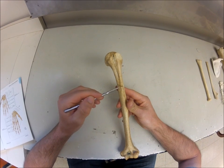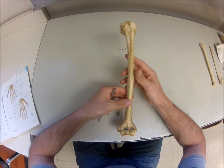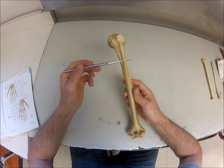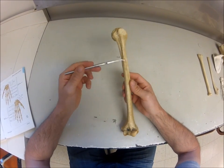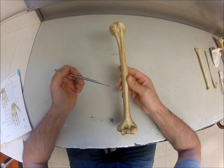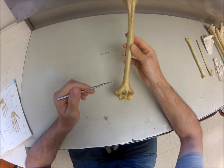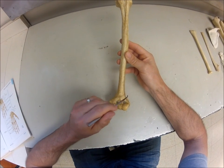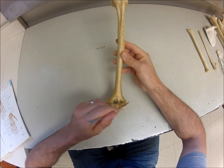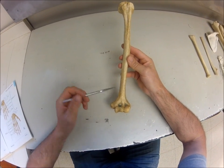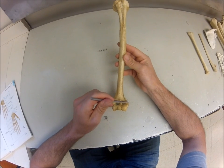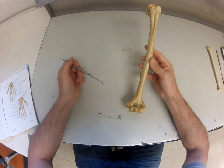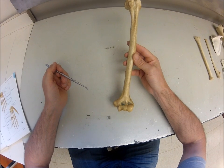If we follow the greater tubercle down a little bit more distally, we find this bump here which is the deltoid tuberosity. Following the humerus down, the main part is the body or shaft. Coming down towards the distal end, the humerus flares out on both sides — these are the medial and lateral epicondyles of the humerus, serving as attachment points for most of the forearm muscles.